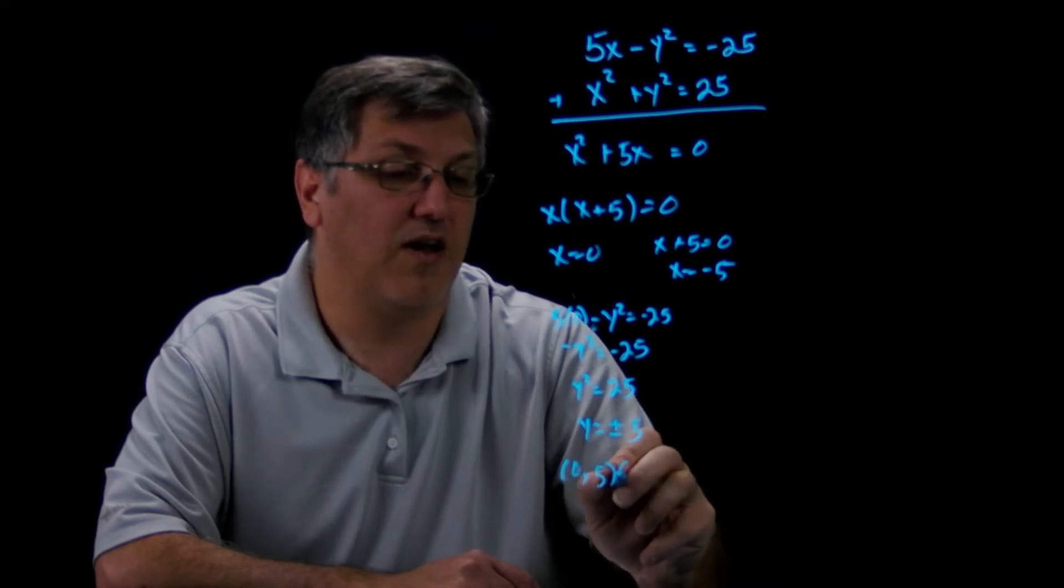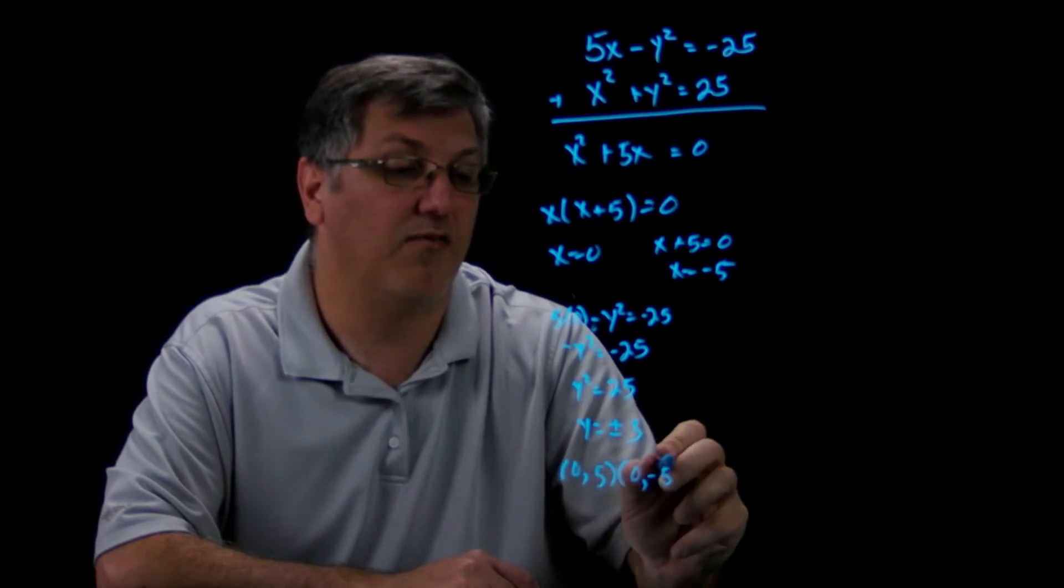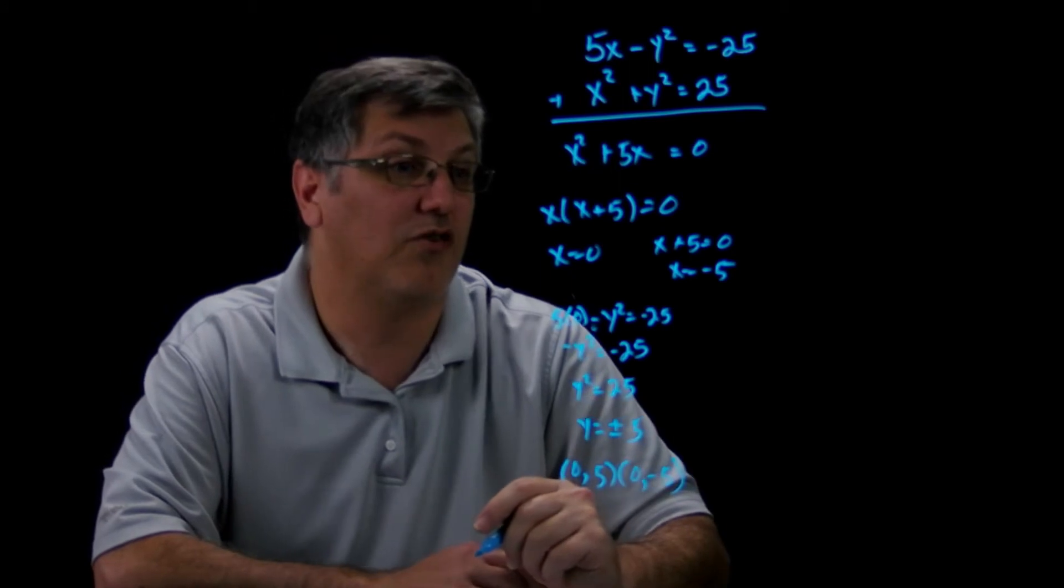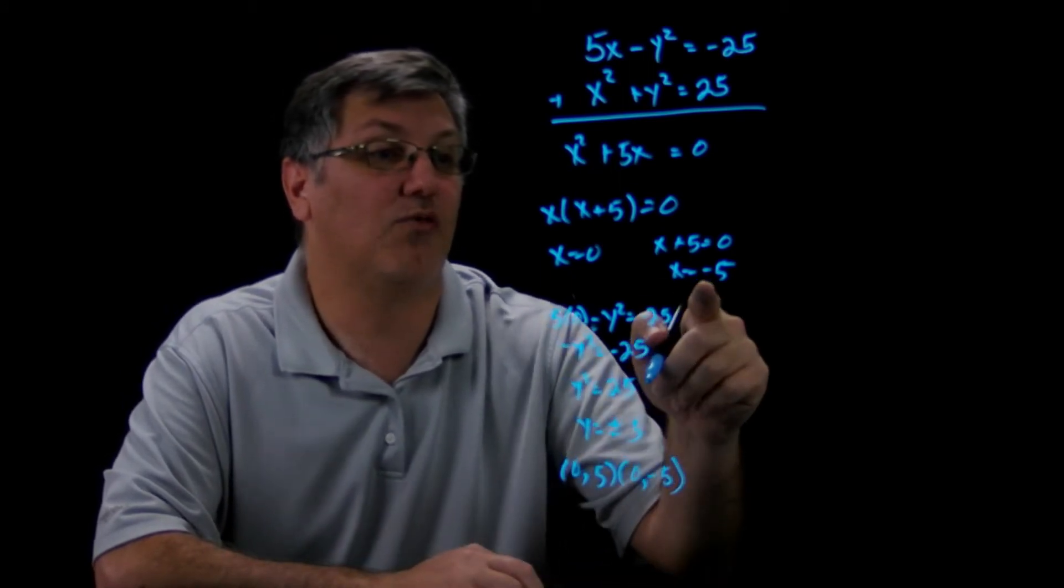So that means when x is zero, I have a point at (0, 5) and I have a point at (0, -5). So there's actually two x-intercepts on there. So let's check when x equals negative 5.